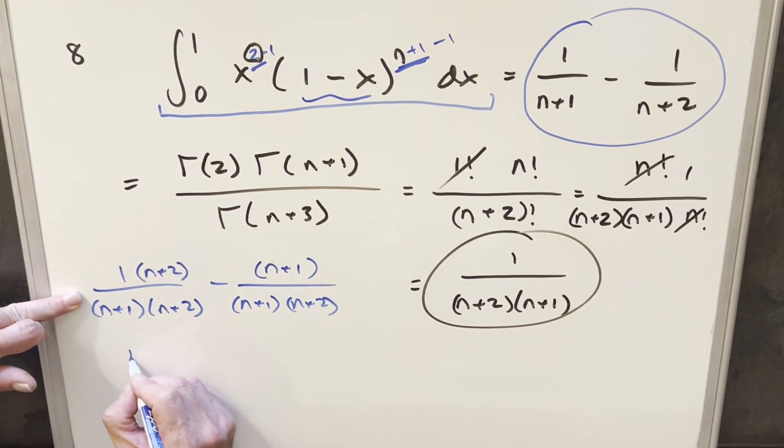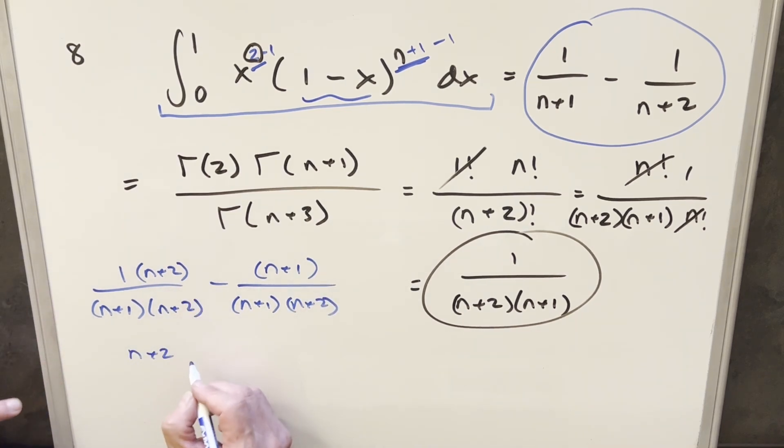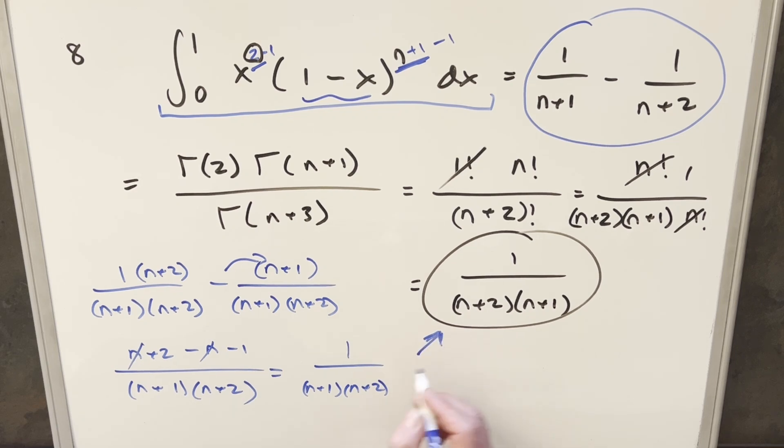Now we have a common denominator. So we write that says n plus 2 in the numerator, distribute in the minus sign. So minus n minus 1 over this stuff. But then the n's are going to cancel. 2 minus 1 in the numerator just gives me 1 over n plus 1 times n plus 2. And that's the same thing we found right there.